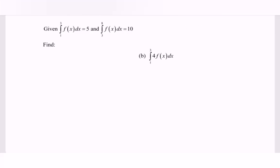Referring to question (b): integrate 4 multiplied with f(x) with respect to x for the limits 1 to 3. We refer to the properties of the definite integral. The integral of c multiplied with f(x) from a to b is equal to c multiplied with the integral of f(x) from a to b.